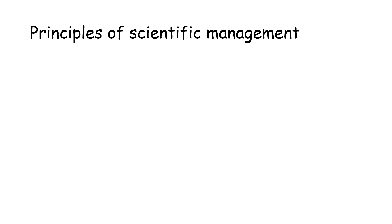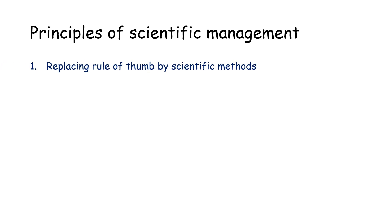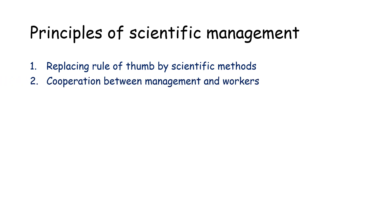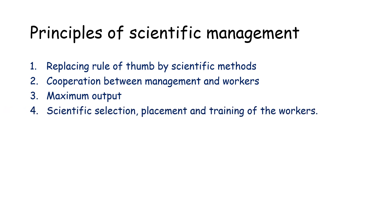Let us go through the different principles of scientific management given by F.W. Taylor: replacing the rule of thumb by scientific methods; cooperation between management and workers; maximum output; scientific selection, placement and training of workers; and equal division of work and responsibility.